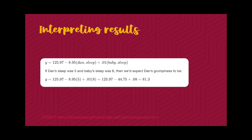Visualized as an equation: Y (grumpiness) equals the intercept minus 8.95 times Dan's sleep plus 0.01 times baby's sleep. For example, if Dan slept 5 hours and the baby slept 8 hours: Y = 125 − (8.95 × 5) + (0.01 × 8). This gives the actual grumpiness score. This is how we look at linear regression equations.